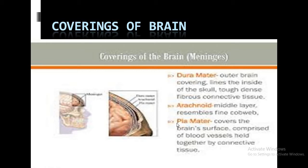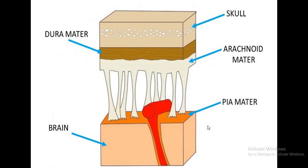The third or innermost layer of the covering of the brain is the pia mater. The pia mater is comprised of blood vessels and is held together by connective tissue. This membrane is in direct contact with the brain.